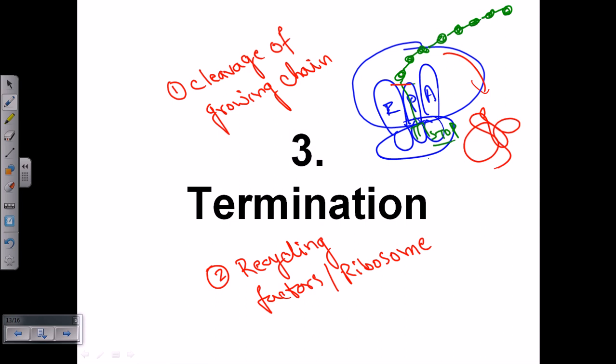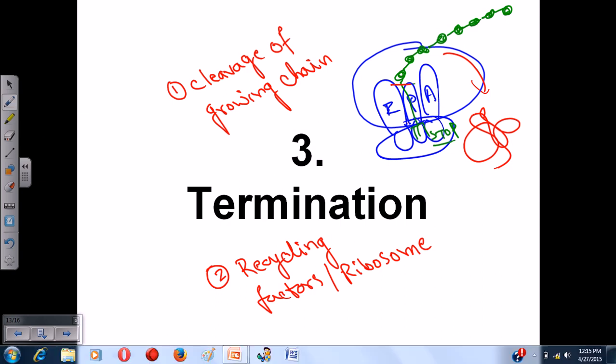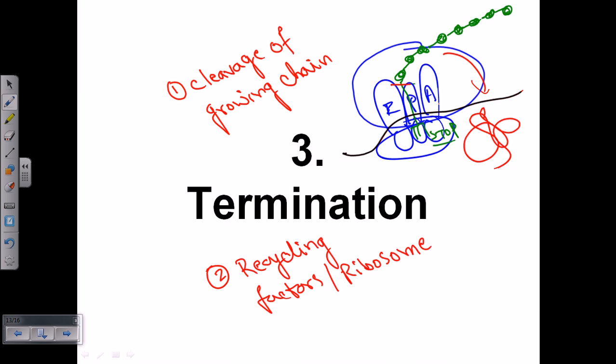The second stage is the recycling of all the factors, because not only the 40S and 60S subunits are present, but also remember there should be an mRNA. There should be an mRNA placed here. So we need to remove that mRNA, remove those subunits from each other, and also remove all those termination and elongation factors.